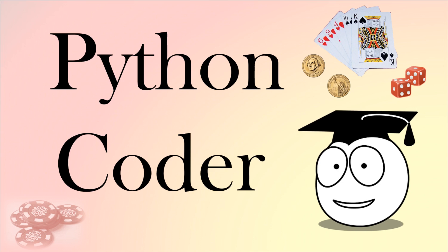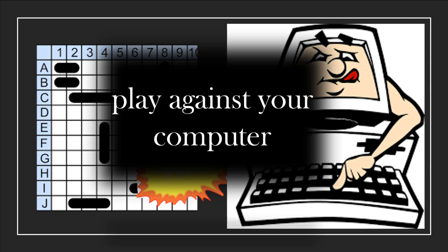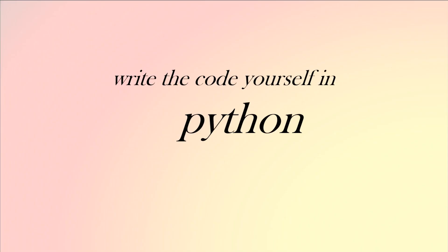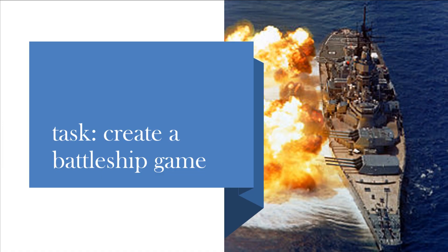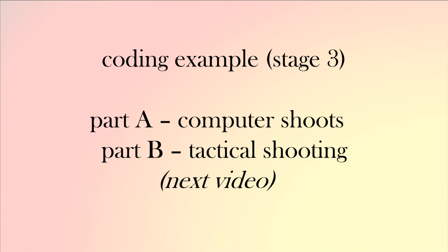Do you want to improve your Python coding? How about programming the computer to play a game of battleships against you? You're going to play against your computer, writing the code yourself in Python. This continues the battleship game series. The code we've already started spans three videos: the first created the board, the second asked players to shoot and checked for hits or sunk ships, and the last video had the computer create the ships. This video we're going to look at how a computer can shoot, and it's in two halves.